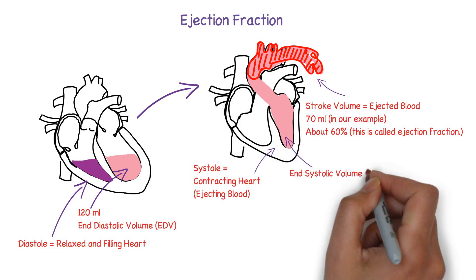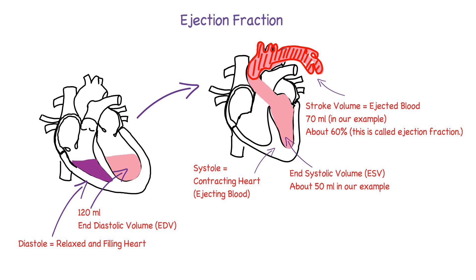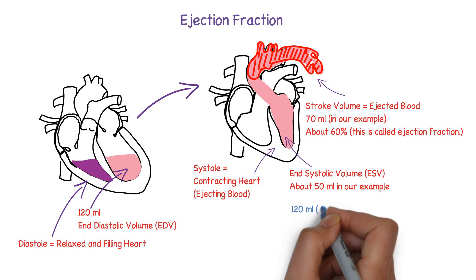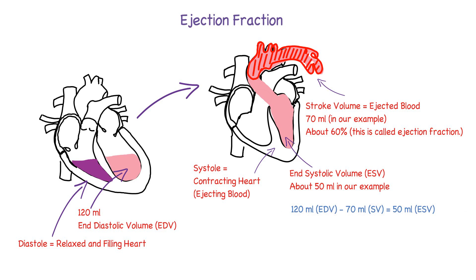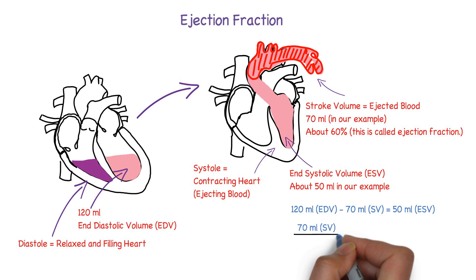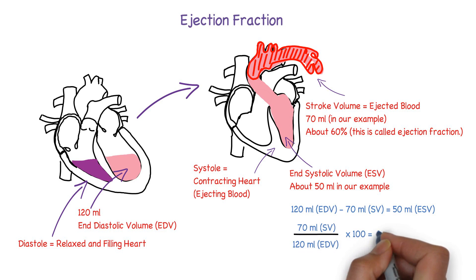The blood volume remaining in the heart after ejection is about 50 milliliters — so 120 minus 70 equals 50 milliliters. This 50 milliliters that stays in the heart at the end of systole is called end-systolic volume. The fraction of blood ejected is calculated by taking 70, dividing it by 120, and multiplying by 100. The result is about 58%, and normally it is 60 to 64%. This percentage is called ejection fraction.